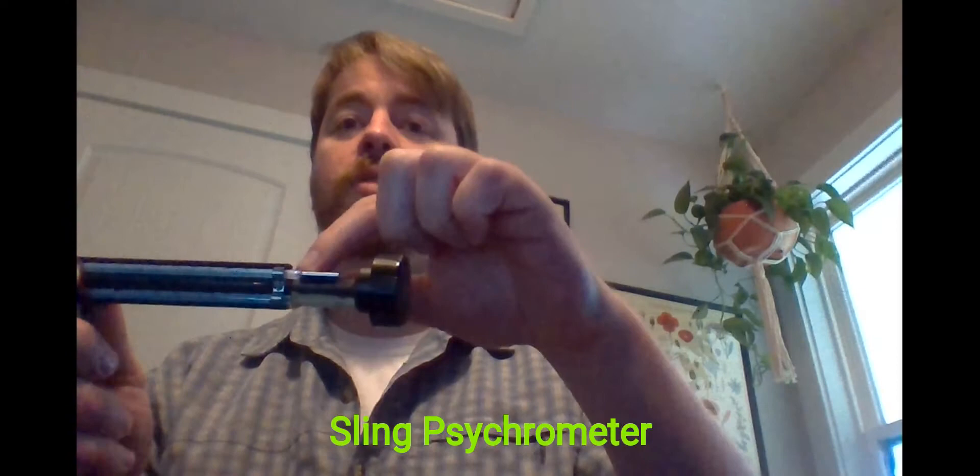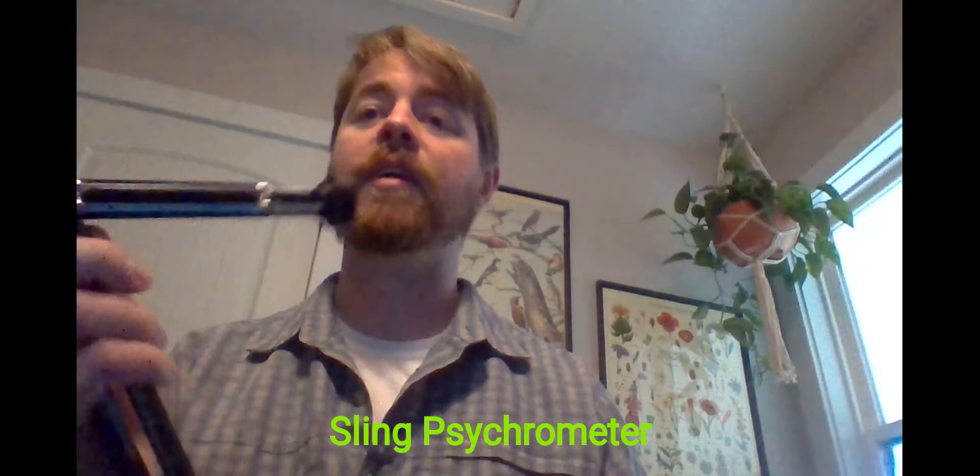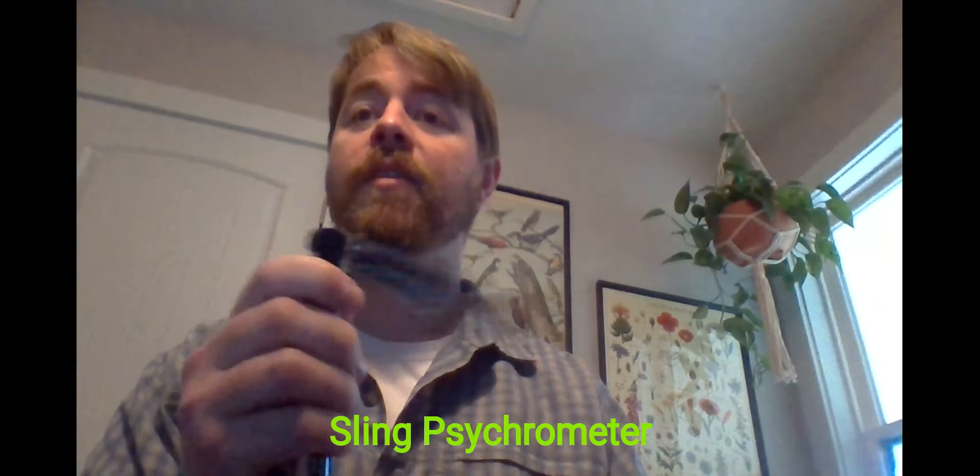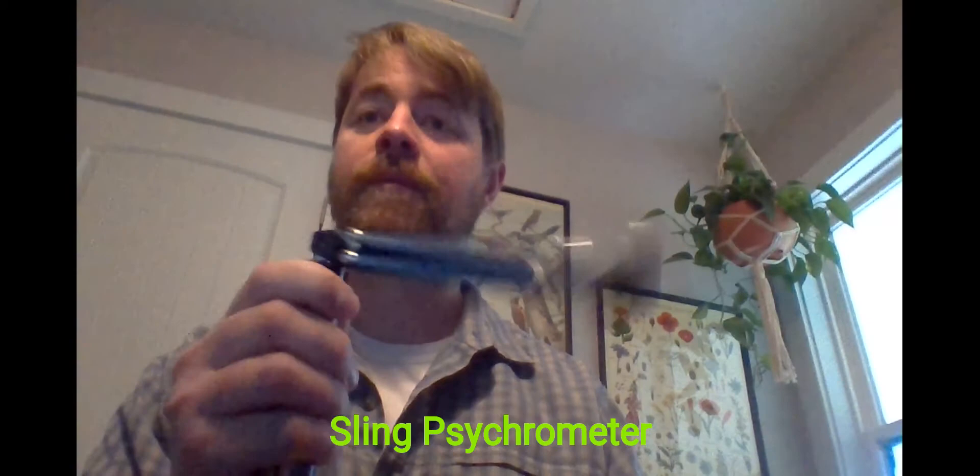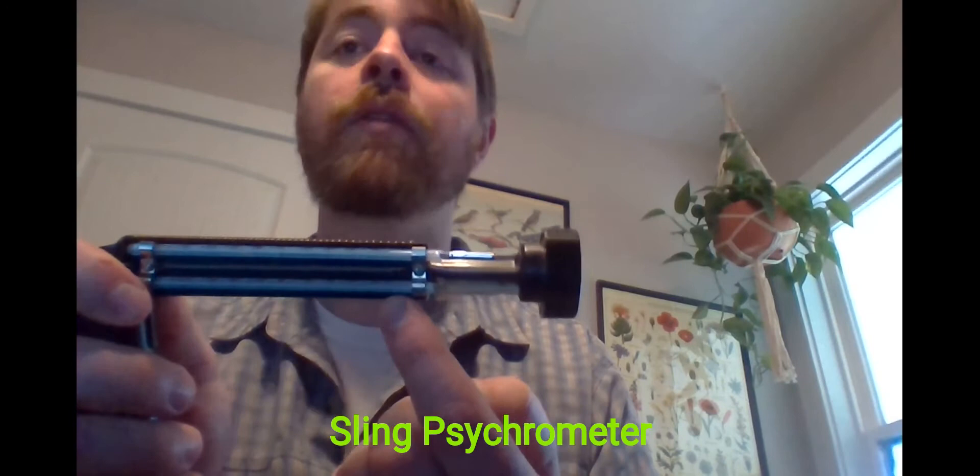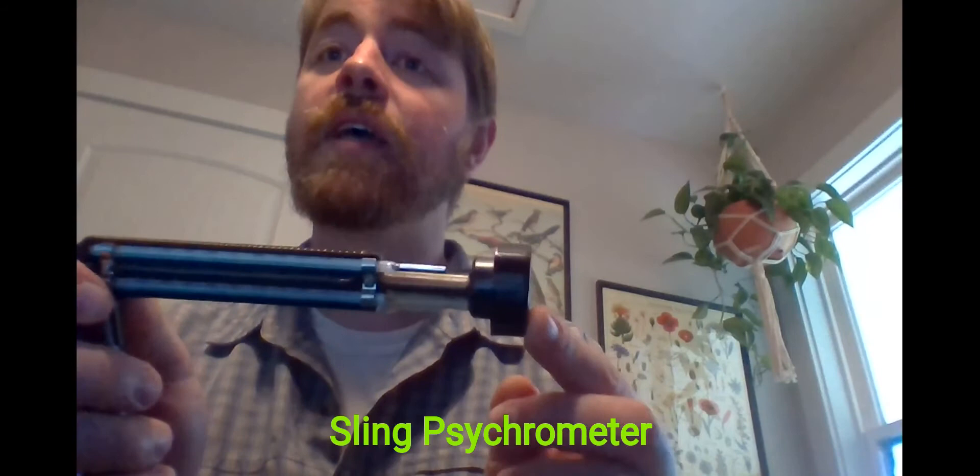The top bulb, we call it the dry bulb, gets the actual air temperature. And then as we spin the sling psychrometer, the wet bulb, the water evaporates and it takes away heat, which changes the temperature in the thermometer. The more it changes, the more water evaporated, which means there's a low humidity. Once we've spun it for a minute or two, we can look at the thermometers and see how big the difference in the temperatures is. The greater the difference, the lower the relative humidity. If the temperatures are really close together, that means the air already has a lot of moisture in it and not much evaporated.